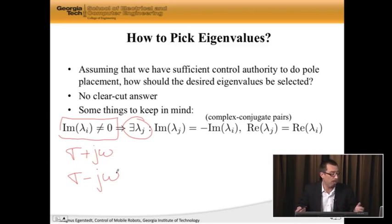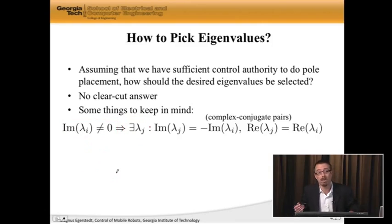The eigenvalues have to show up in complex conjugate pairs if they are complex. That's the first thing to keep in mind: we can't just assign one complex eigenvalue.